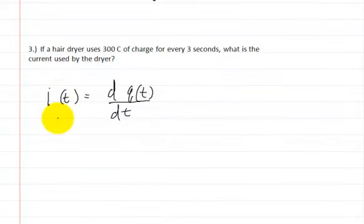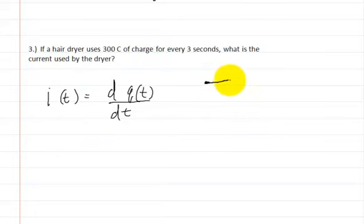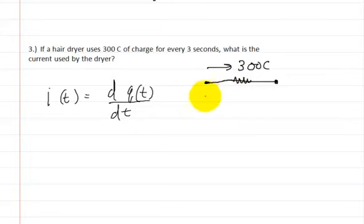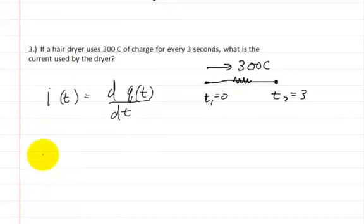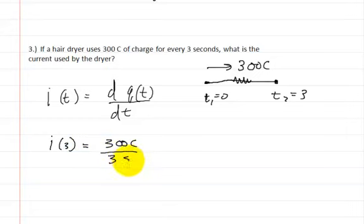Let's go to number 3. If a hair dryer uses 300 coulombs of charge for every 3 seconds, what is the current used by the dryer? This will be the representation of the dryer, with 300 coulombs flowing through for every 3 seconds. t1 is 0 seconds, t2 is 3 seconds. So the current at 3 seconds is equal to 300 coulombs divided by 3 seconds, which equals 100 amps. And that's how you would solve that problem.